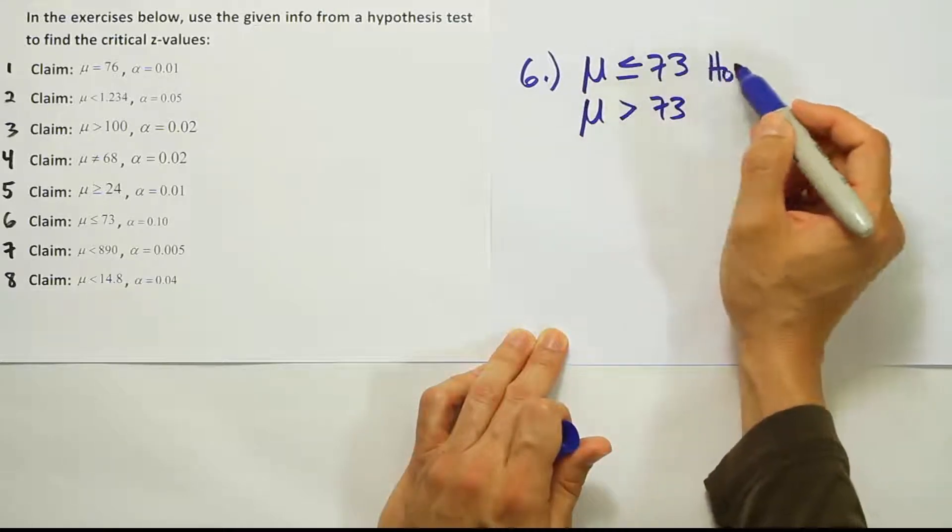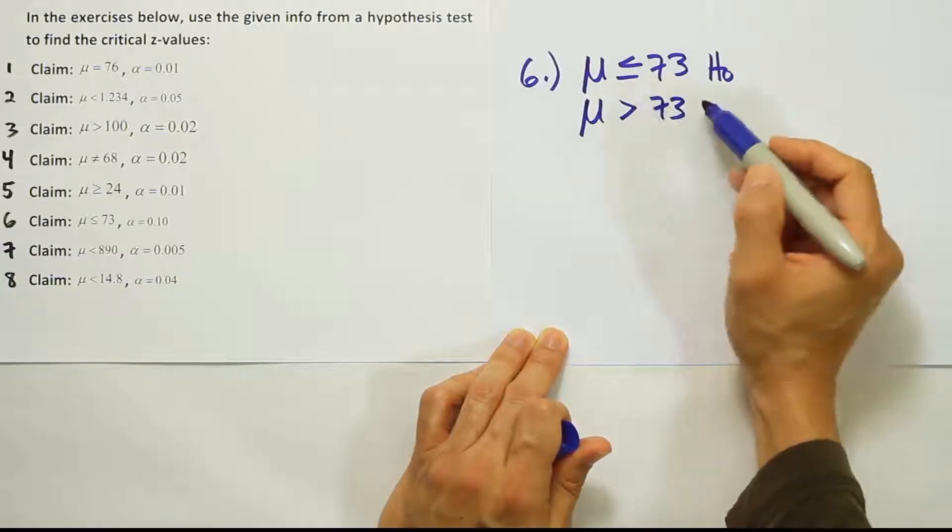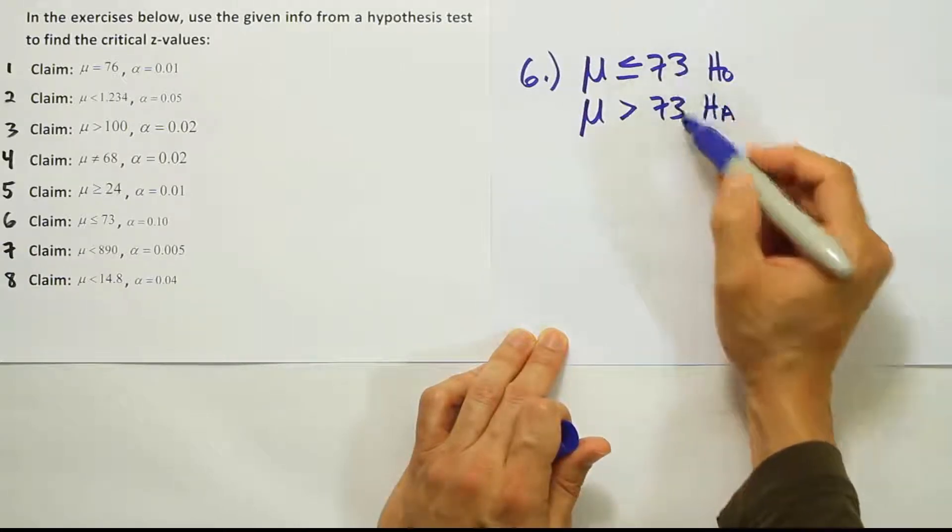Again, less than or equal to is the H0, so it must be greater than 73 for HA, so that we cover all the possible scenarios, right?